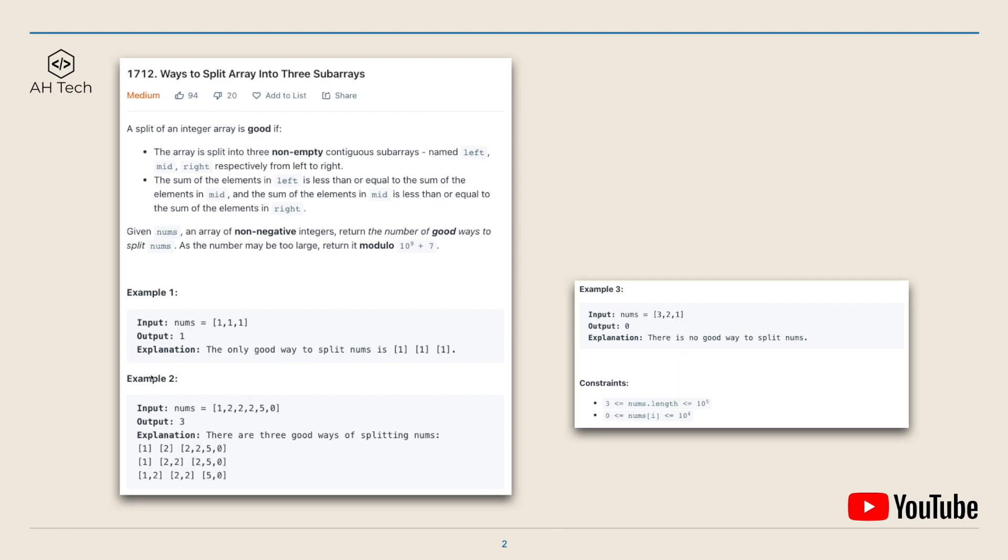We have to return the number of good ways to split the input nums array. For example one, the nums array is [1,1,1] and the only good way to split this array is with an element of one in each. For example two, there are three good ways of splitting the nums array. For example three, since the nums array is in descending order, there's no good way to split this array to satisfy this requirement.